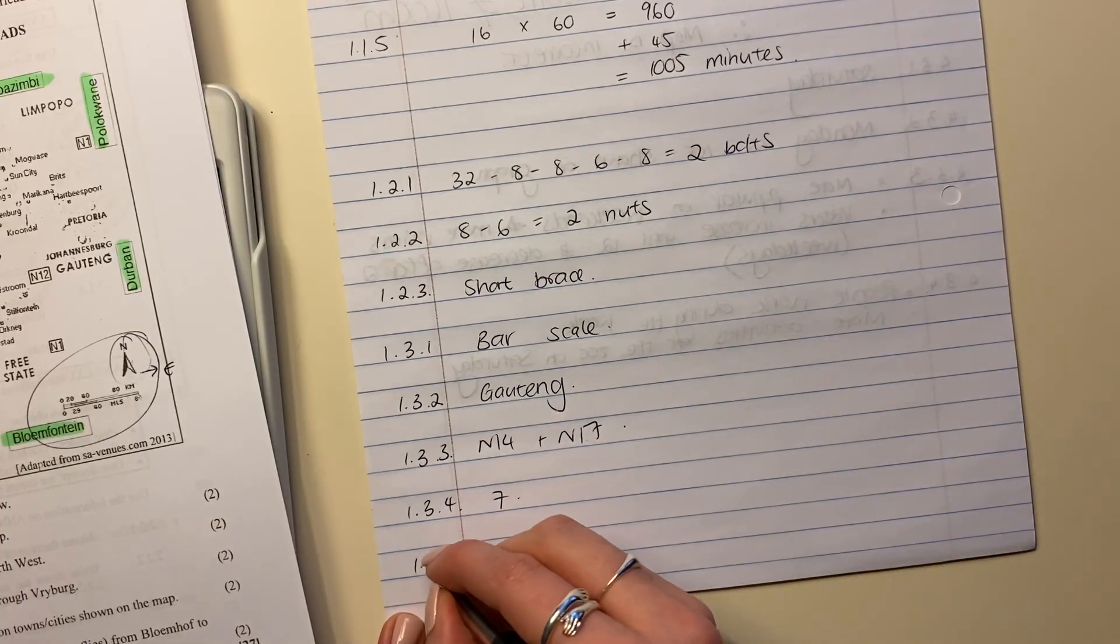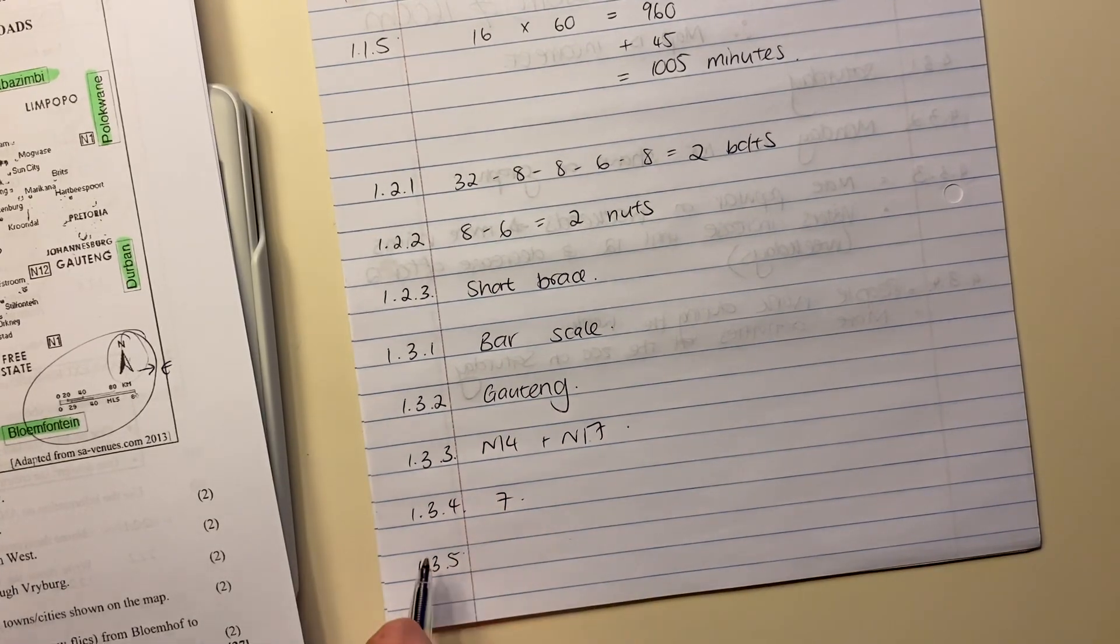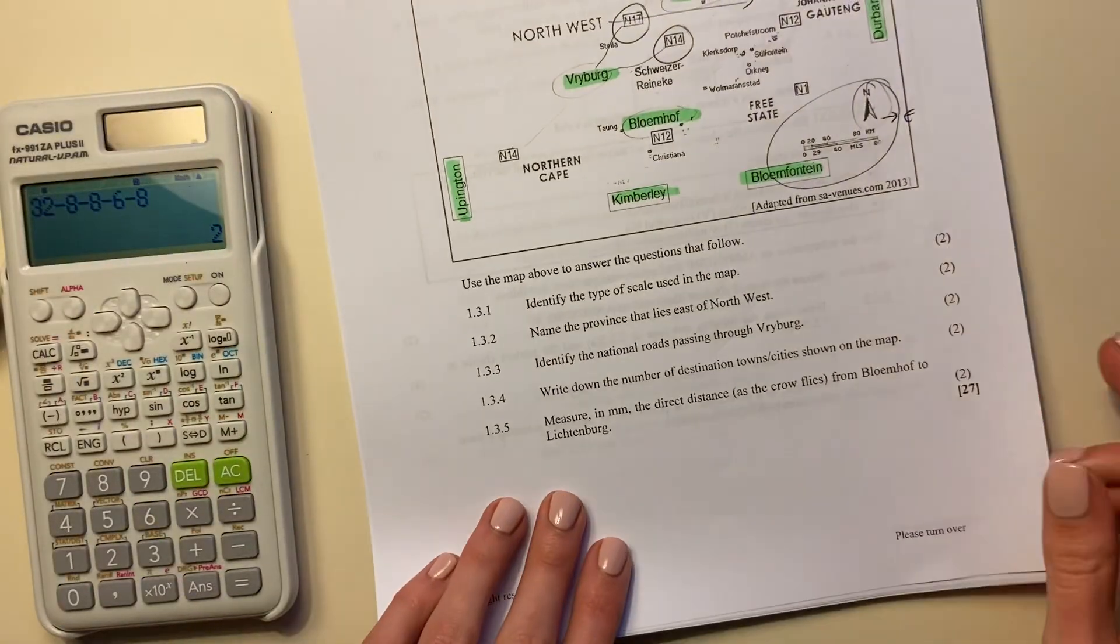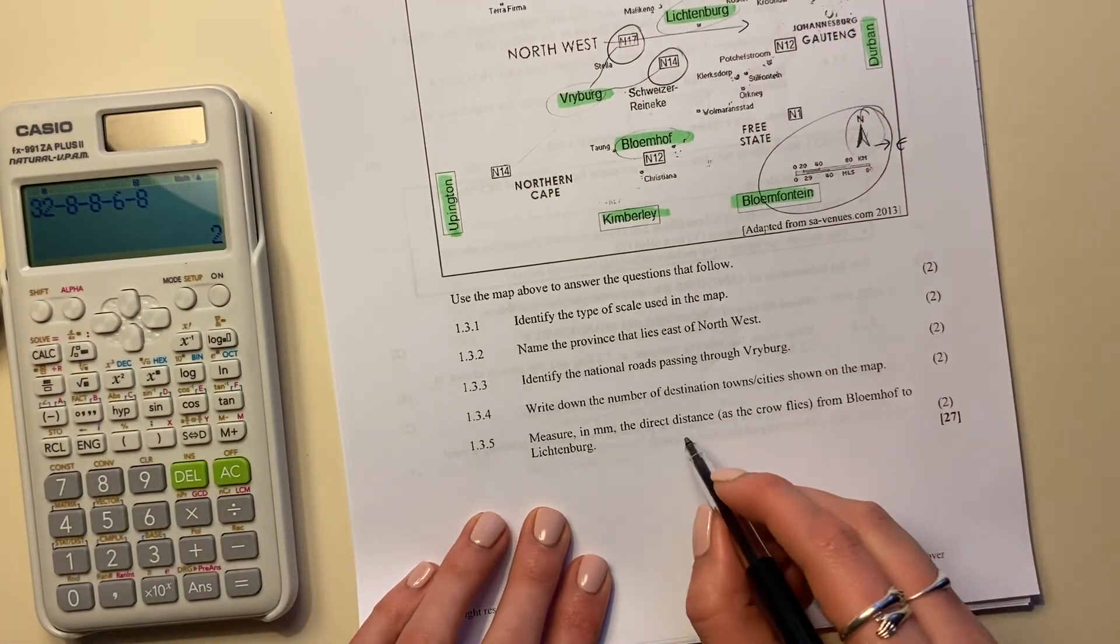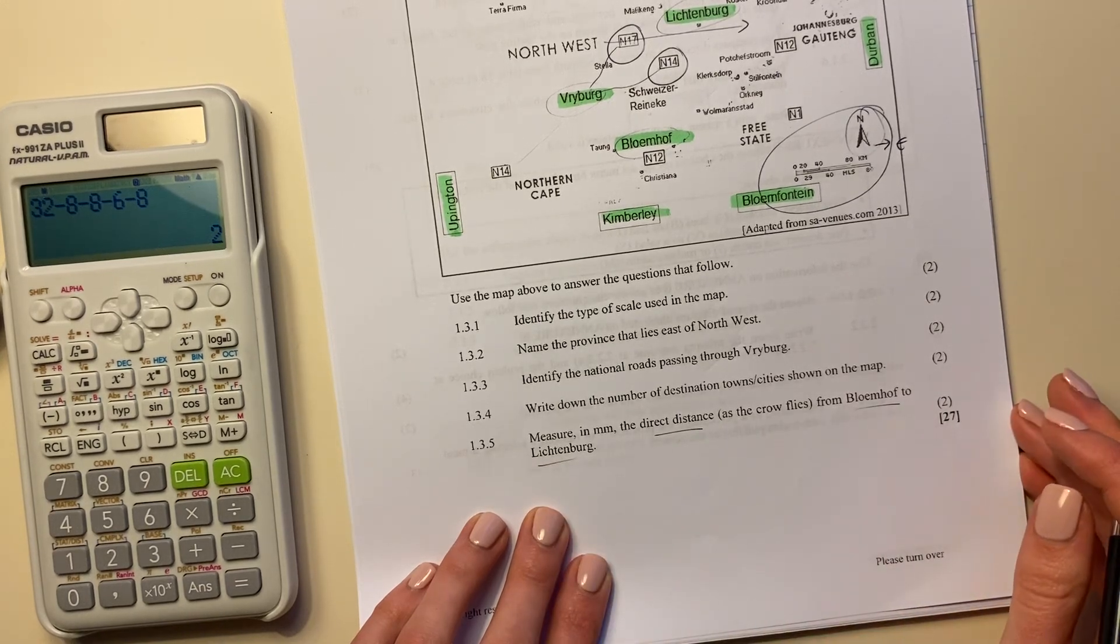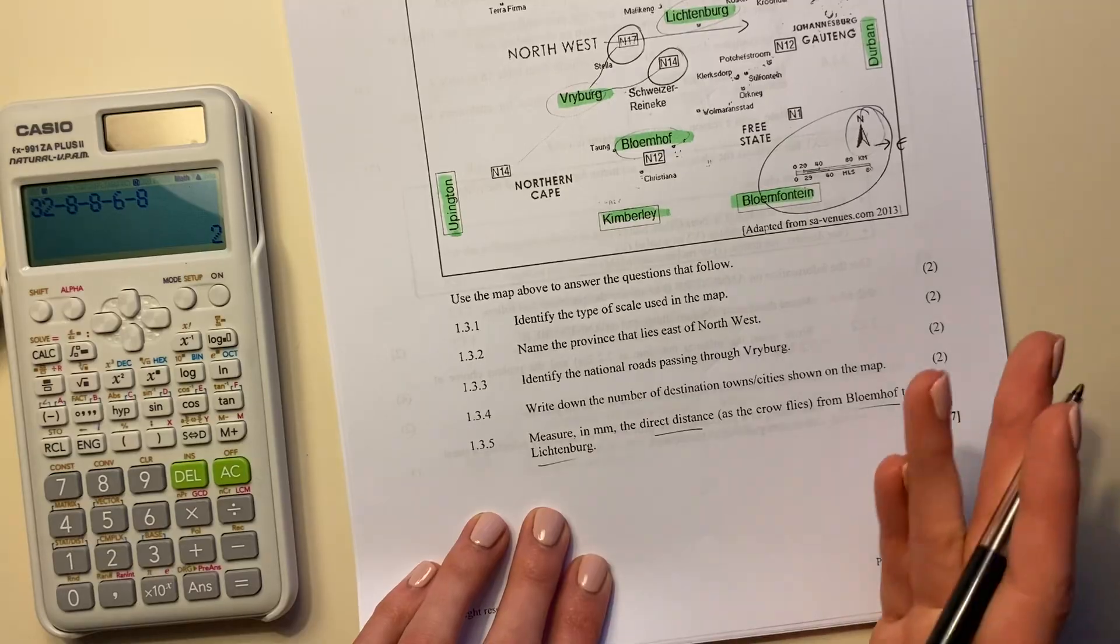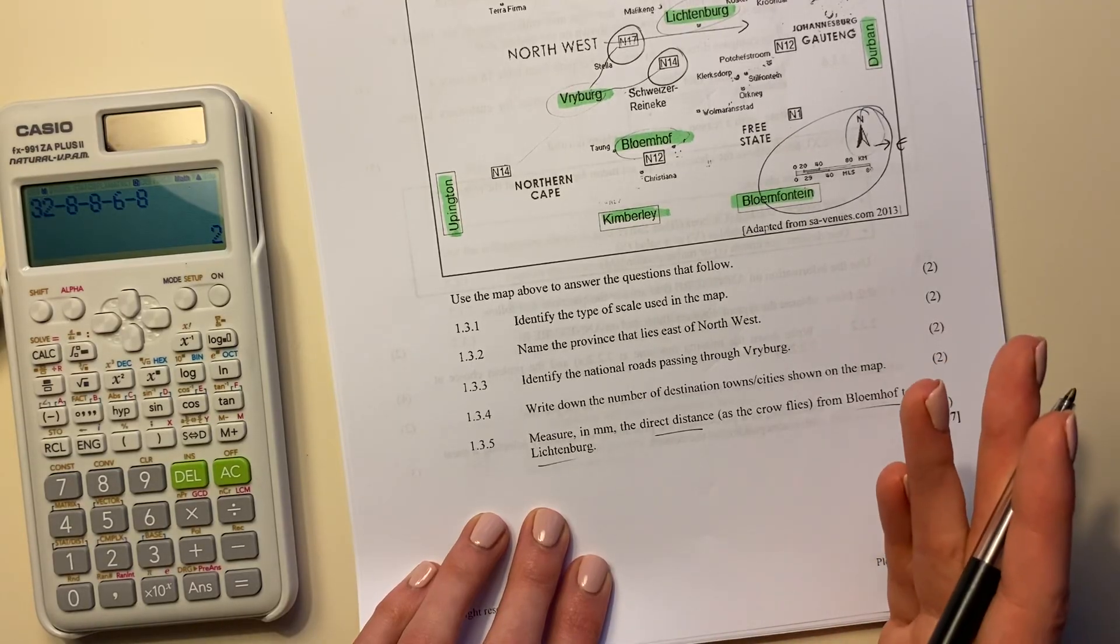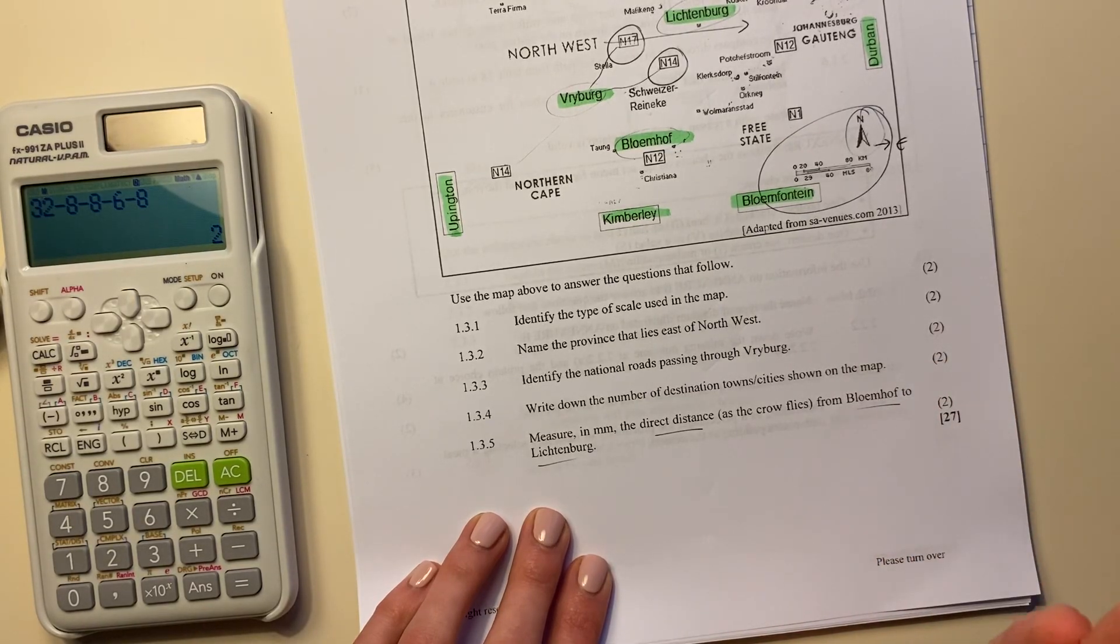Let's get to our very last question. And then we are done. It says measure in millimeters the direct distance as the crow flies from Blomhoff to Lichtenberg. Okay. So it doesn't want us to convert it into anything other than what it is. It literally just wants us to measure the distance.